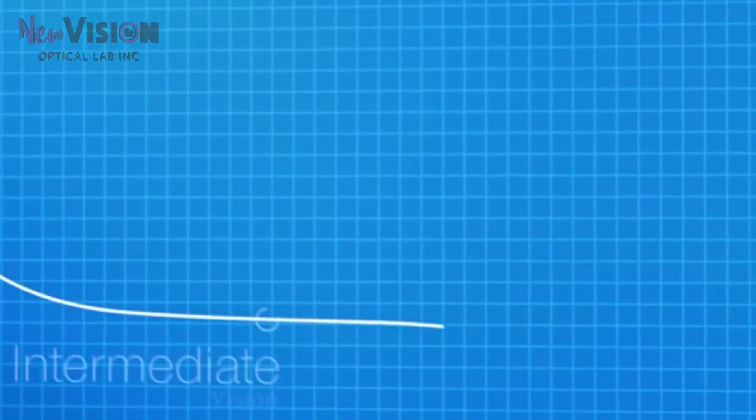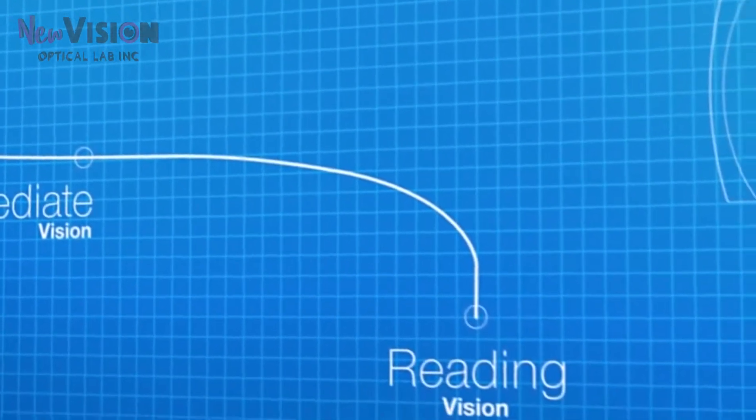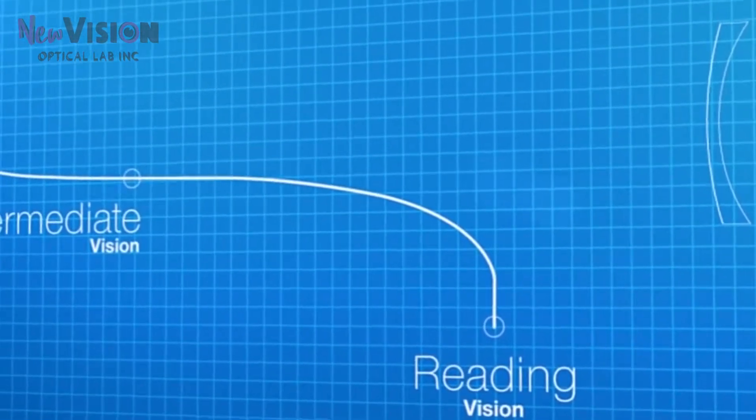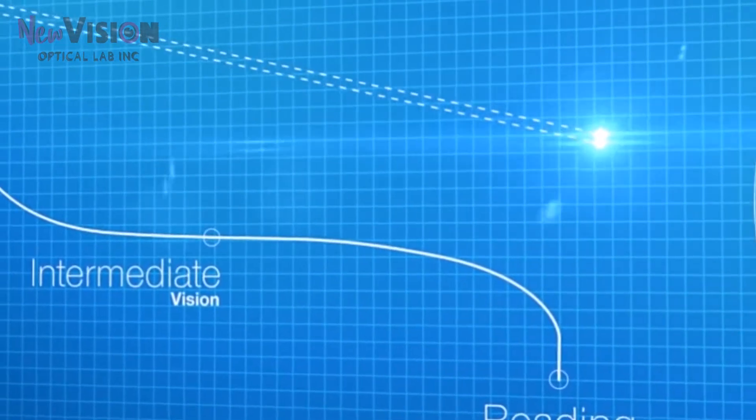Far vision, intermediate vision, and reading vision as well. In the upper part of the lens, designed for far vision, the passage of rays coming from distant objects is simulated.